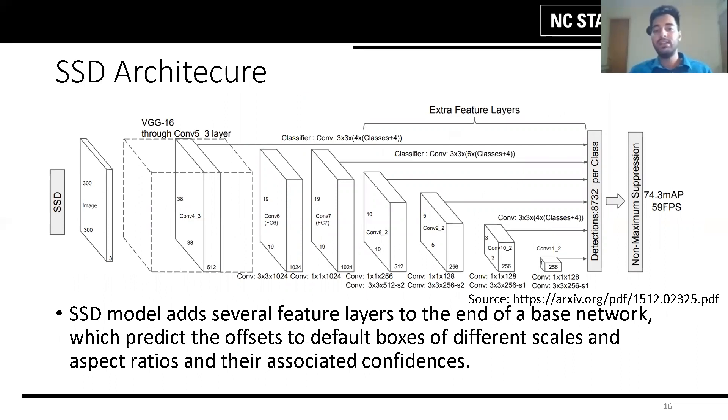The architecture of SSD utilizes a VGG16 structure which adds several feature layers to the end of a base network using a set of convolutional filters. This filter decreases in size progressively and allows prediction of detection at multiple scales.